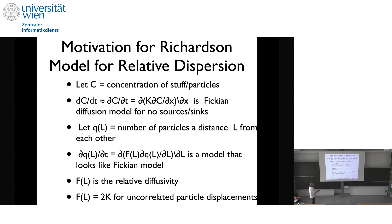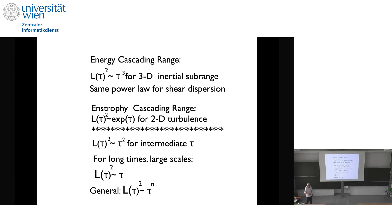Let's motivate Richardson's model for relative dispersion. If we have a concentration of particles, Fickian diffusion gives dc/dt = d/dx(K dc/dx) with no sources or sinks. If we let q(l) be the number of particles at a distance l from each other, we want a law where K becomes a function of l. So we call f(l) the relative diffusivity, and in the limit for very large time as particles disperse, f(l) = 2K. You can show that l² is proportional to t³ in the 3D inertial subrange, which is also the same power law for shear dispersion.